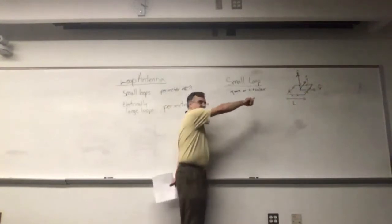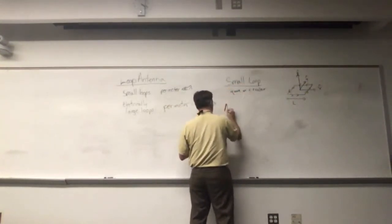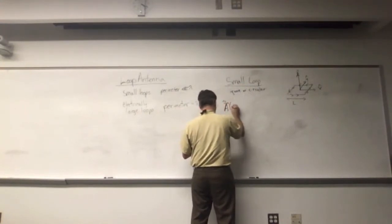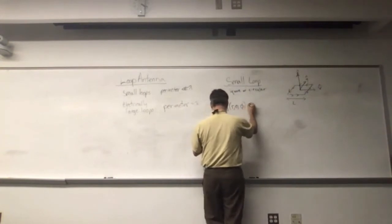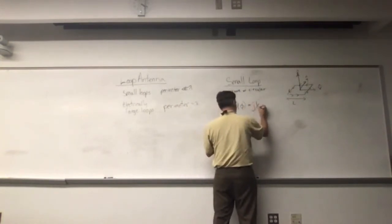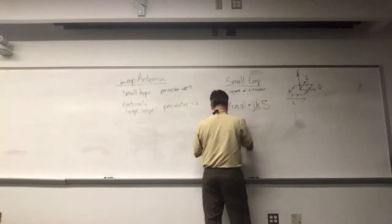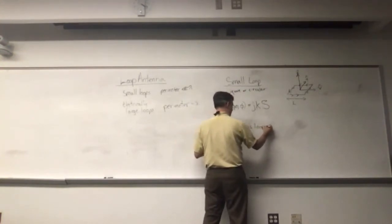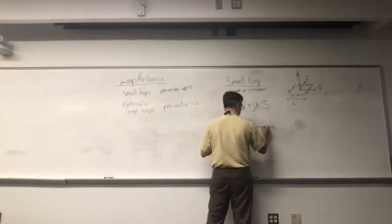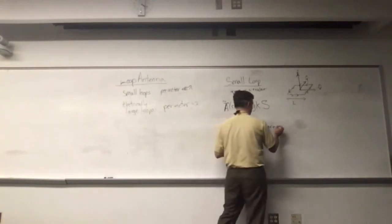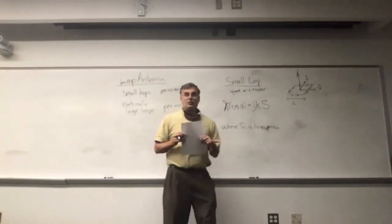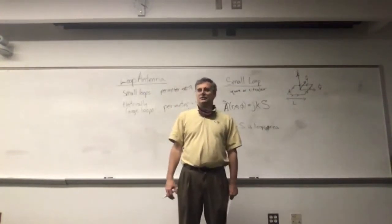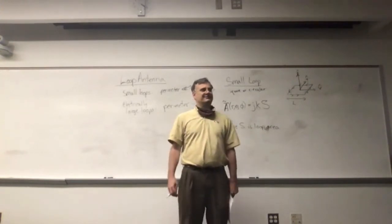So the vector magnetic potential for this radiating system is going to be in the phi direction. If this is a square loop, it's L squared, that's what S is. If it's a circular loop, it's pi r squared. If it's an ellipse, you probably have to use an elliptical integral to calculate the perimeter.